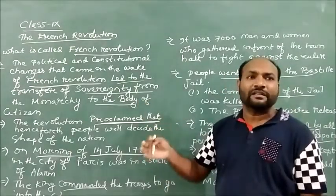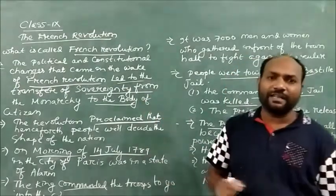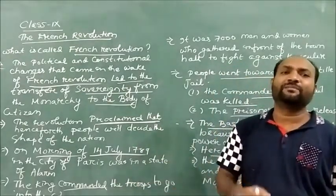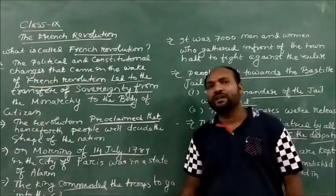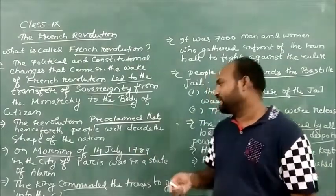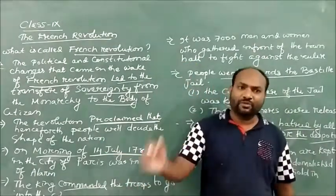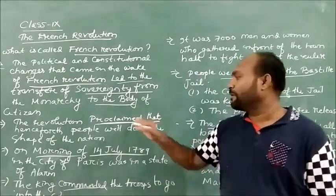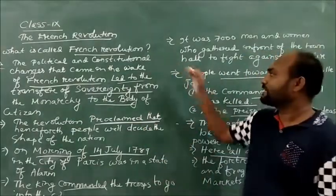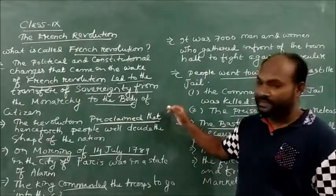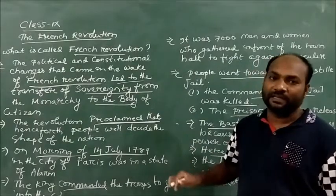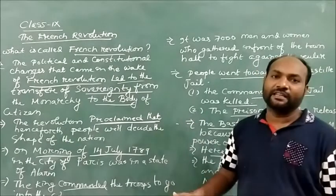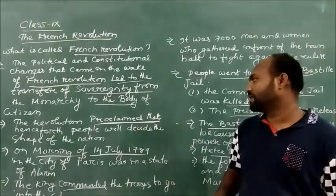All the citizens of French society were continuously demanding that they are no longer going to accept the powers of the monarchy. Rather they want to be the rulers of the society by themselves. The peoples are demanding that henceforth they will decide the future of the society. They want to establish a democratic society with political equality, economic equality, and democratic structures.